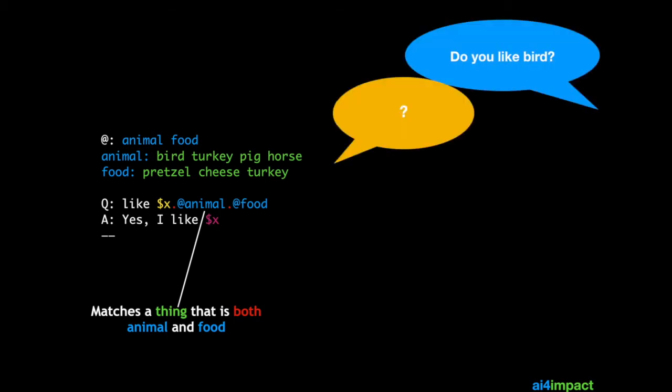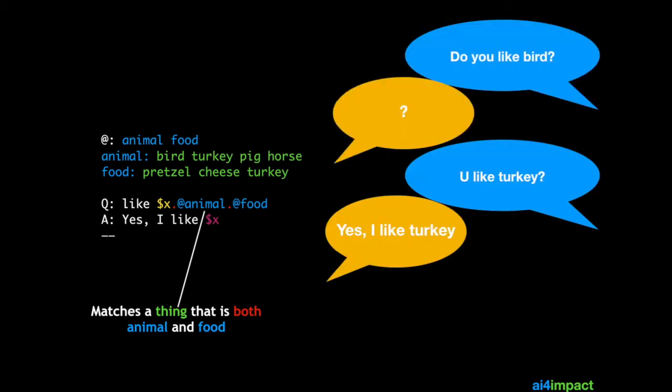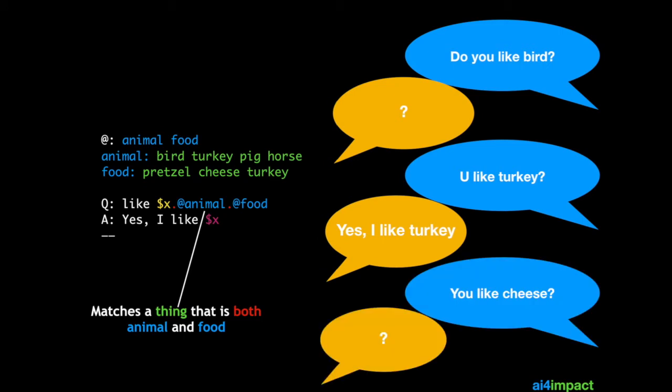So do you like bird? It's IDK. Do you like turkey? Yes, I like turkey. Do you like cheese? Again, an IDK.